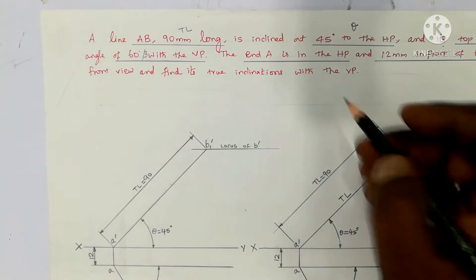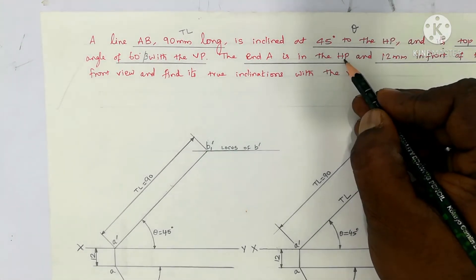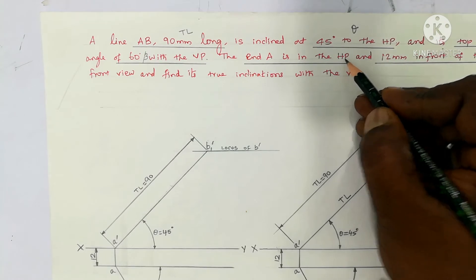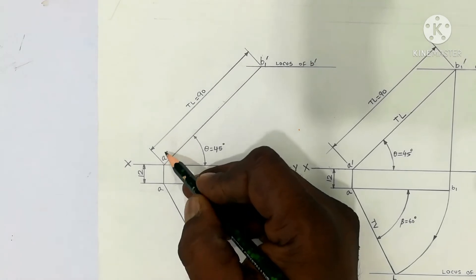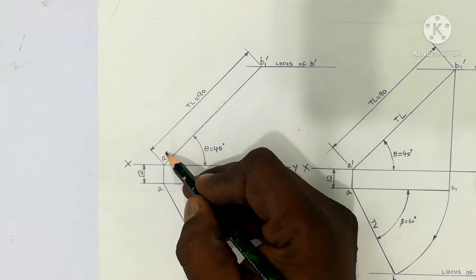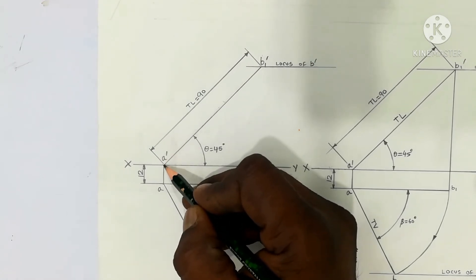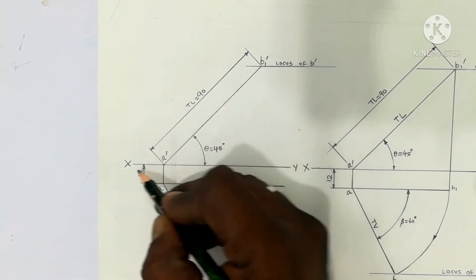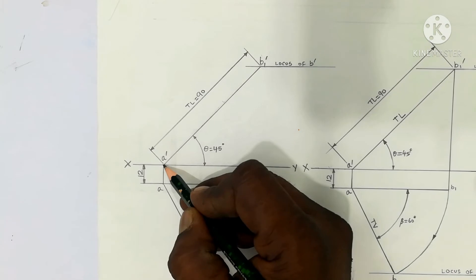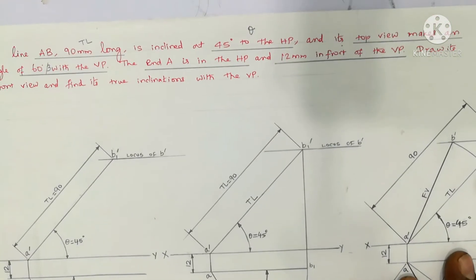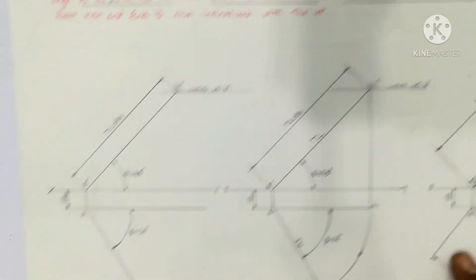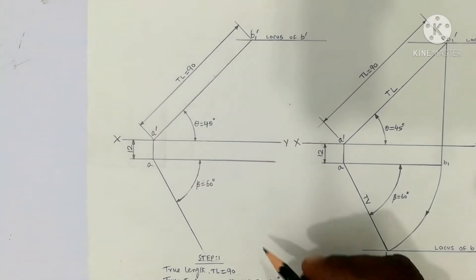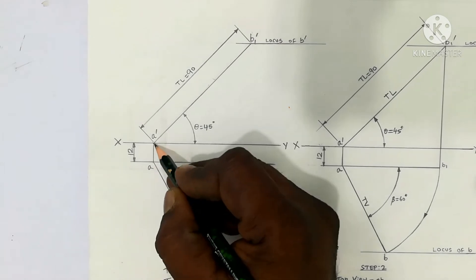The end A is in the HP, so there is no above HP distance. This is the above distance. The distance will be at point A. In front distance is 12mm, in front of VP. That is the origin point A. So 12mm is 1.2cm in front of VP. The distance is from XY.